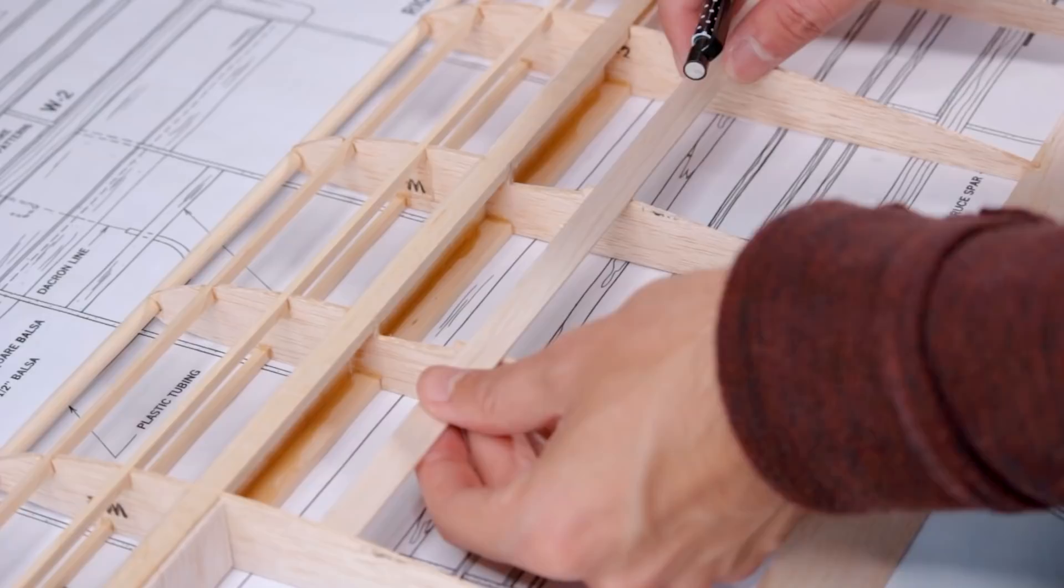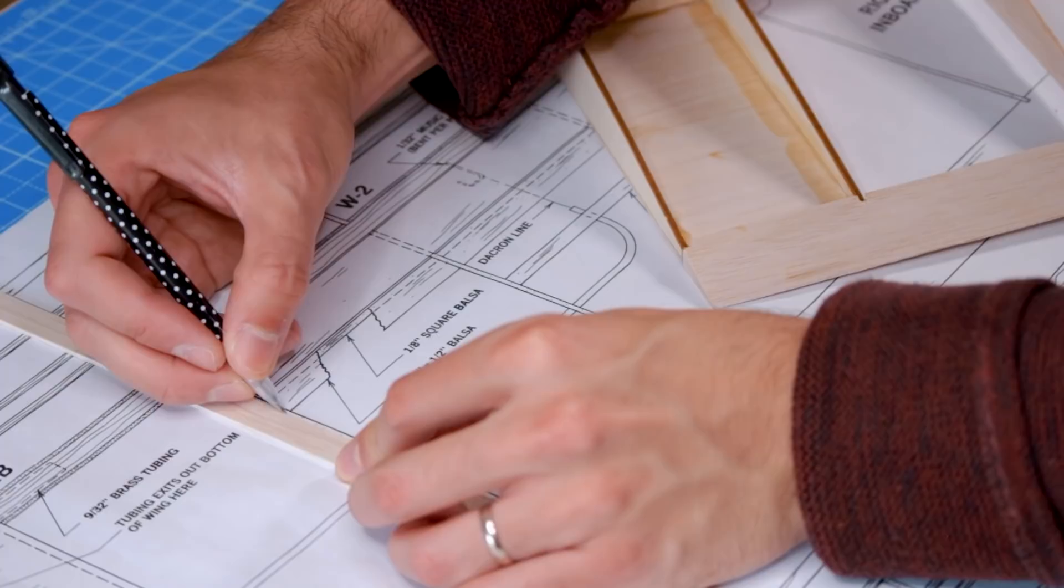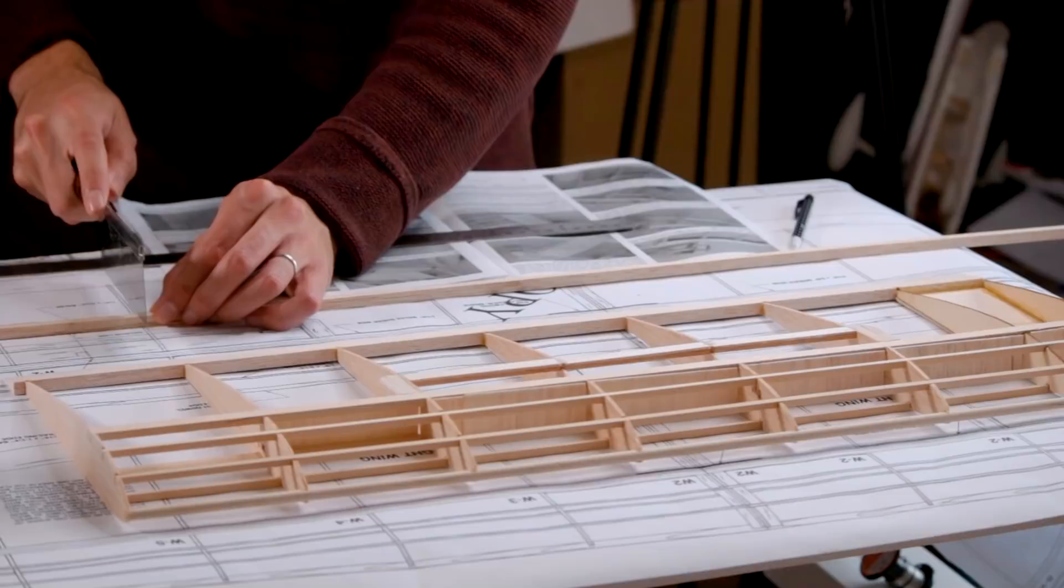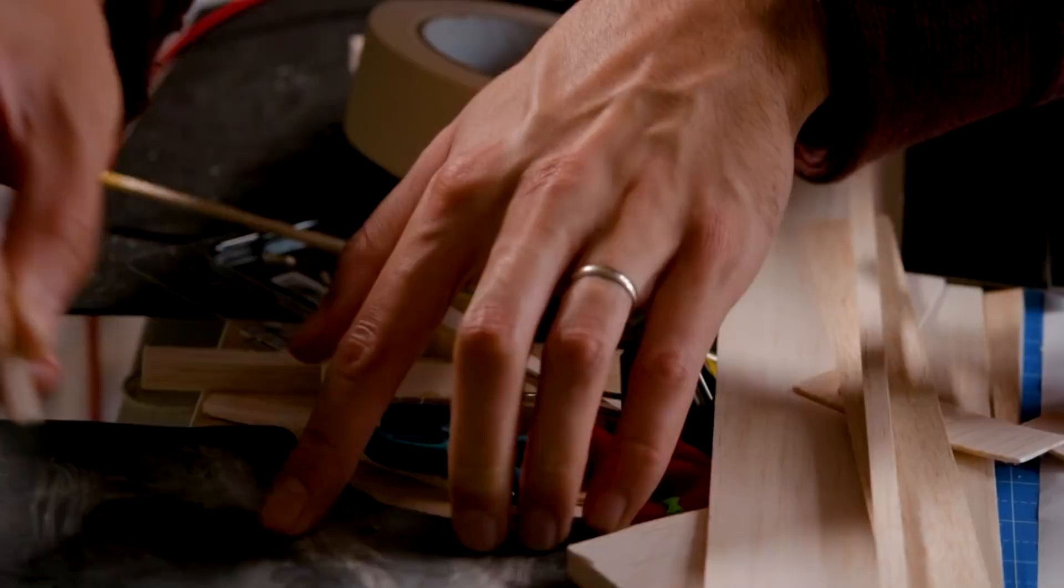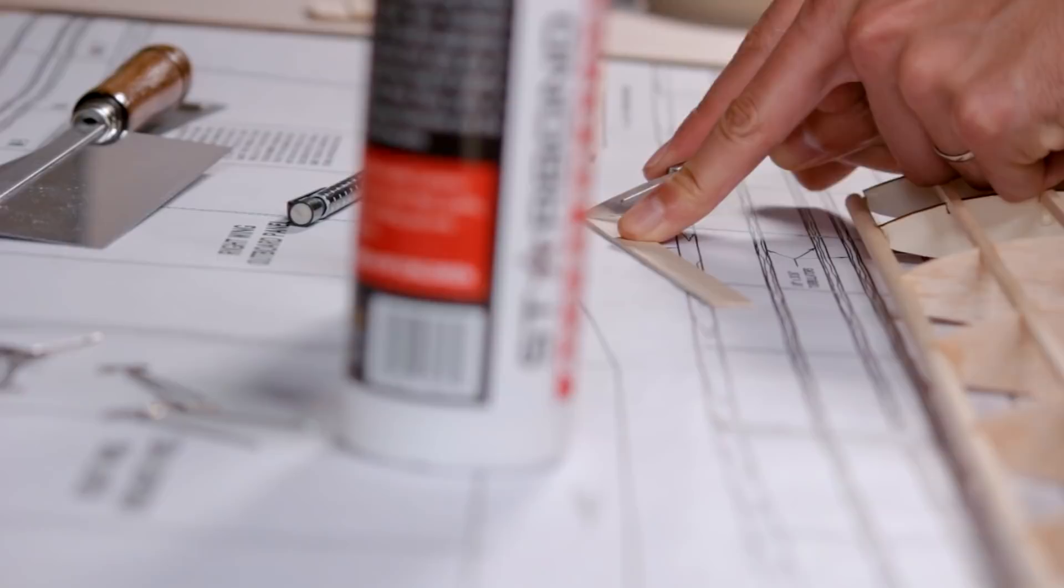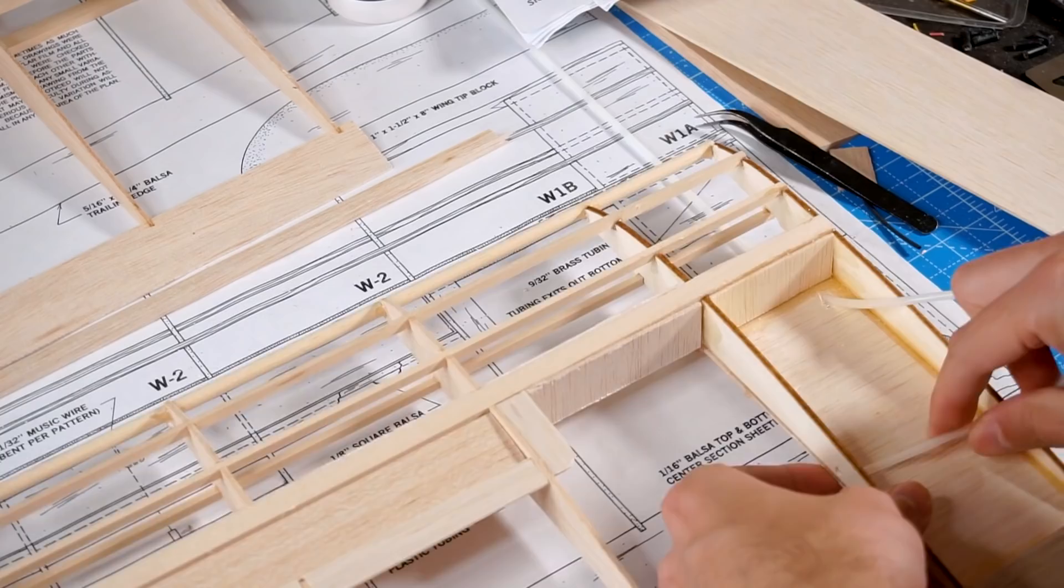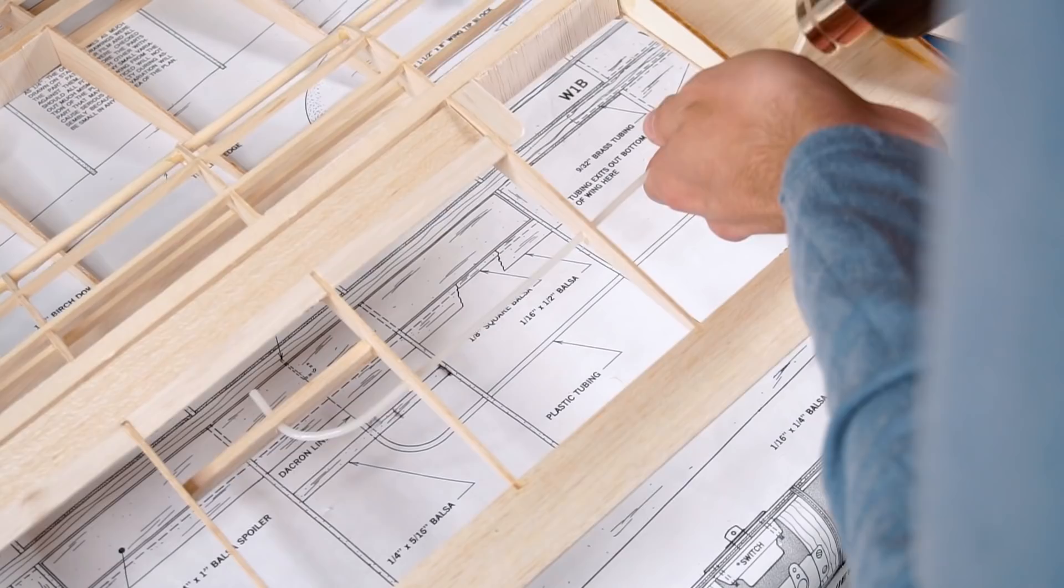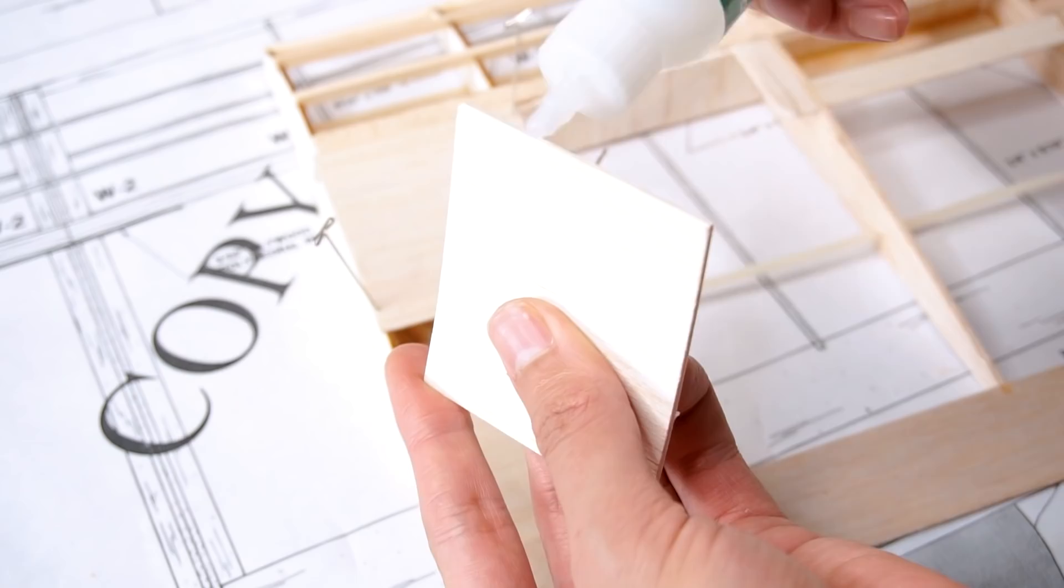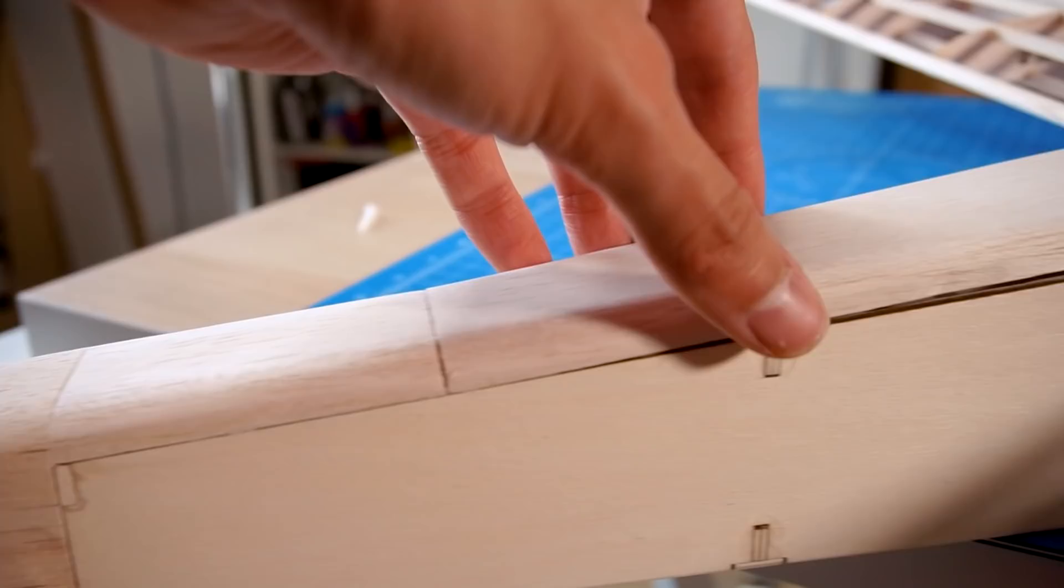According to the plan, we have to put these little pieces of balsa wood to make the covering process easier around the spoilers area. The balsa wood canopy has to be sanded down to show the shape in the intersection with the wings.